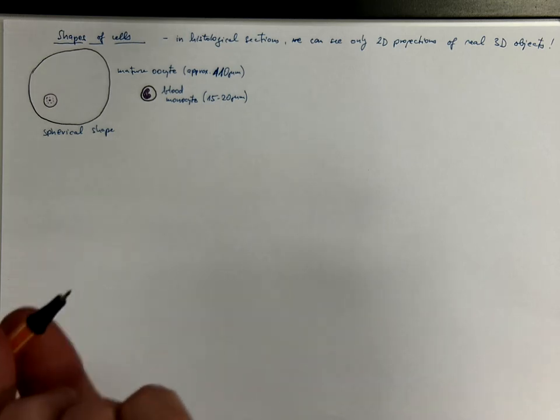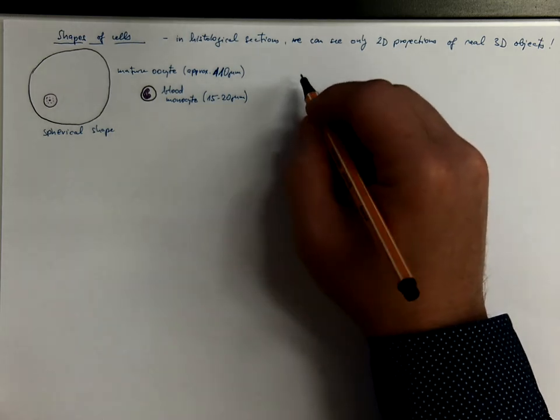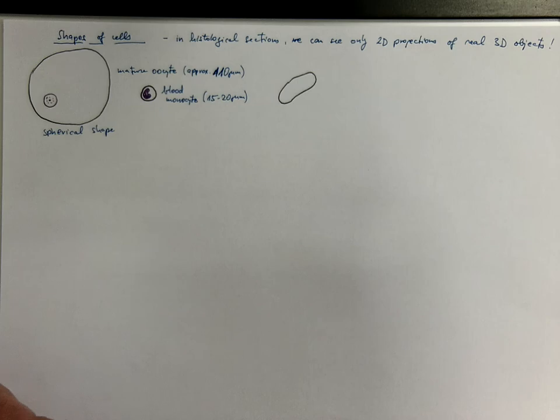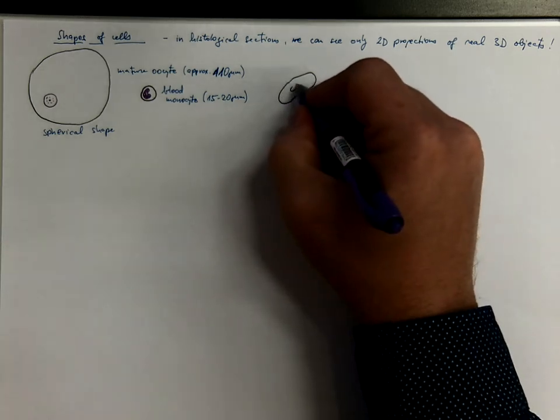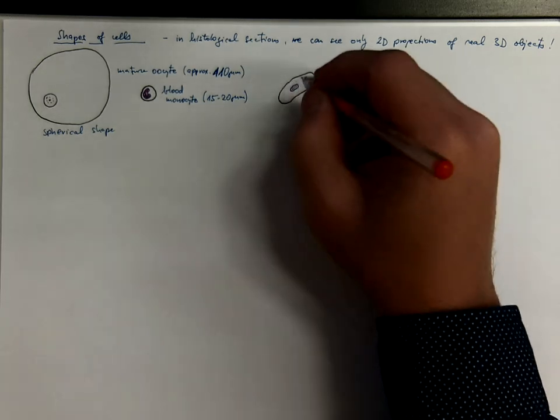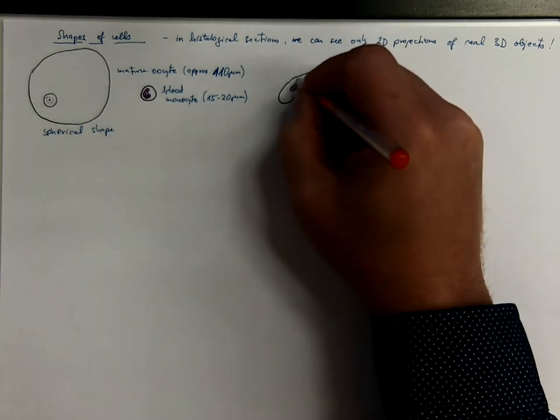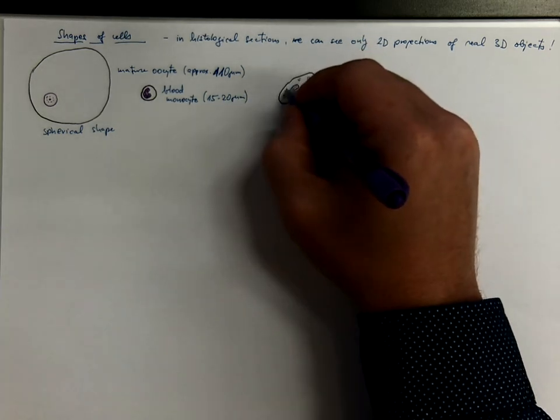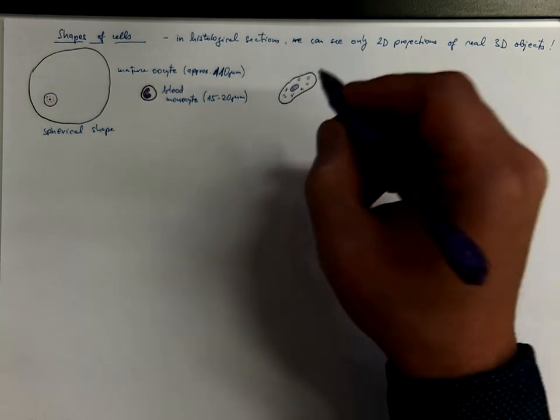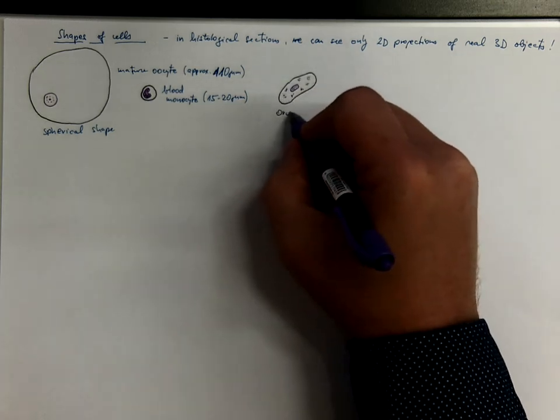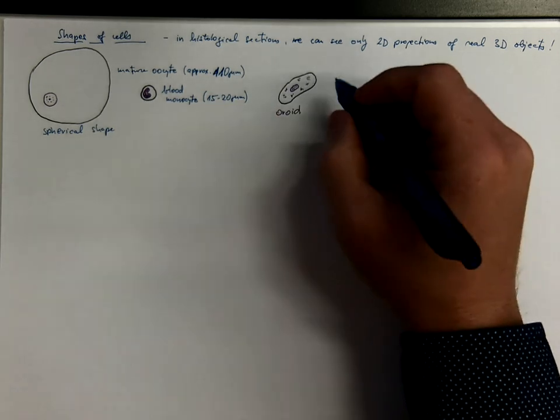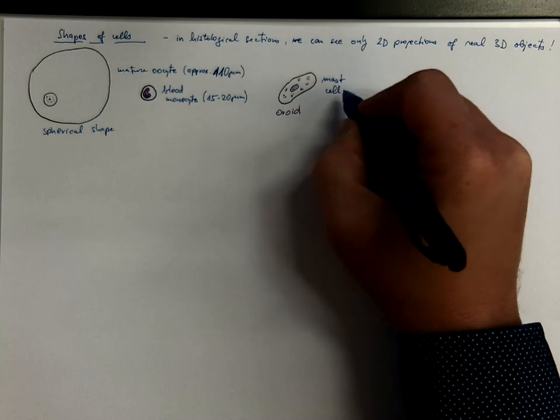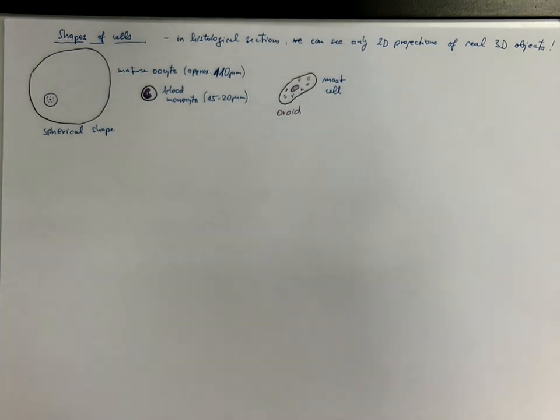A similar would be ovoid shape or ellipsoid shape, such as mast cells of connective tissues. They have many granules that could be released upon activation. So this would be ovoid shape. An example would be mast cell or heparinocyte. That's the same cell from the connective tissues.